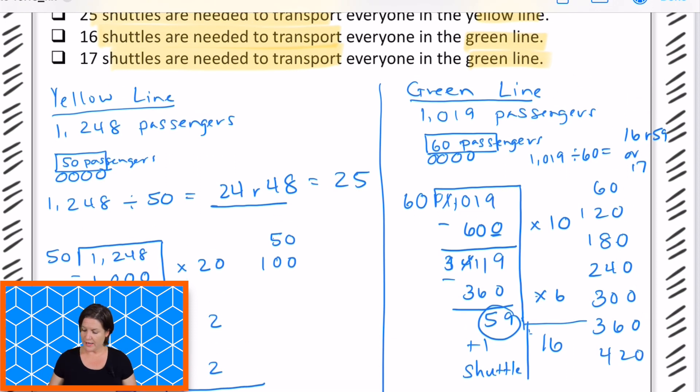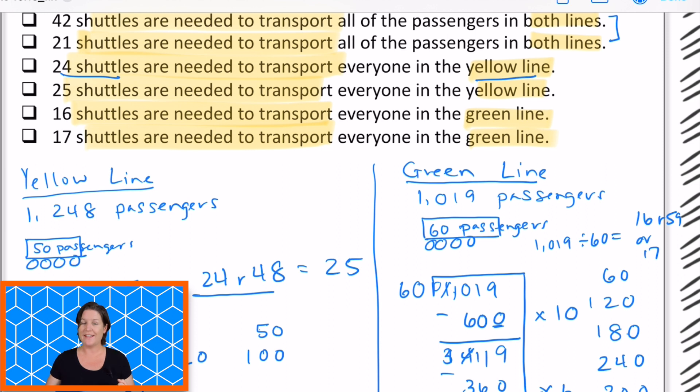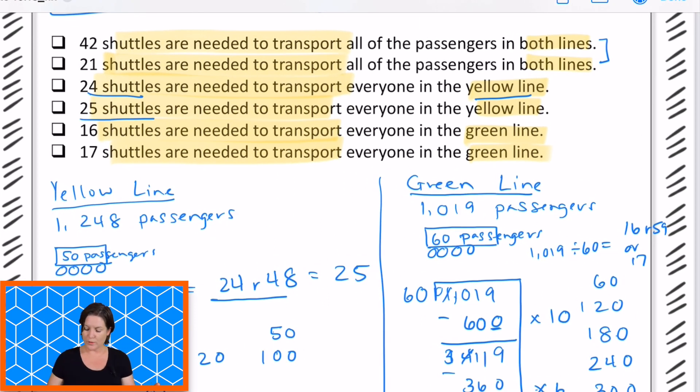Okay, now that we've done all that work, let's go see what we've got. Let's go down. I'm going to come back to these two in just a second because they're talking about both lines, and that's where I'd have to combine them, right? But here it says, for the third choice, it says, 24 shuttles are needed to transport everyone in the yellow line. Was it 24 or was it 25 shuttles? Yeah, it was 25 because we had a remainder that still needed a shuttle to get home. So 25 would be our answer here, and we can eliminate that one. Next, we have 16 or 17 shuttles are needed for the green line. What we said over here that we had 16 with a remainder of 59 passengers, so we would need 17 shuttles, not 16.